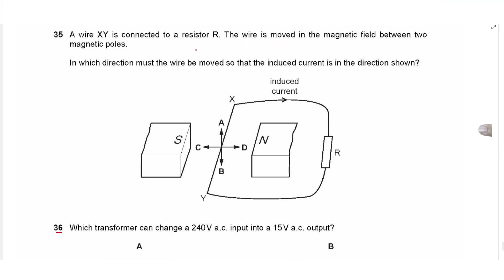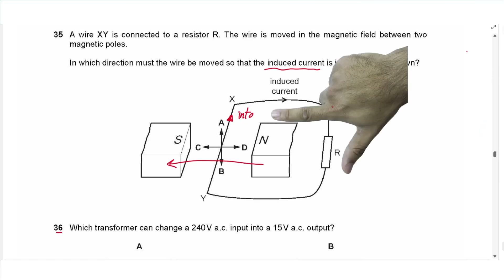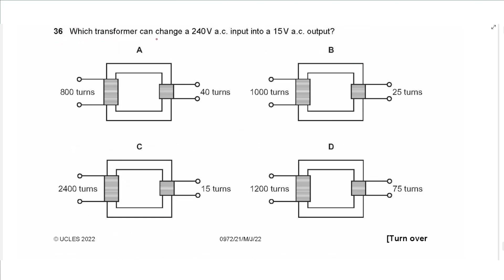Question 35: Wire XY is moved in the magnetic field between two magnet poles to induce a current into the page. The magnetic field points to the left. Using the right-hand rule — index finger pointing with the field from north to south and middle finger into the page — the thumb points toward the bottom of the page. The answer is B.